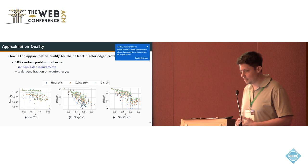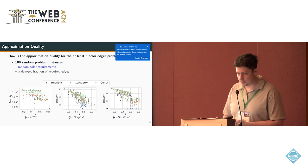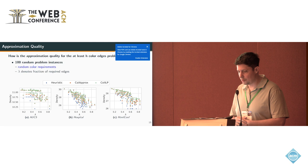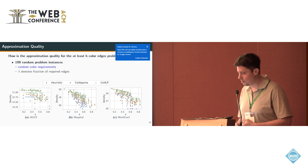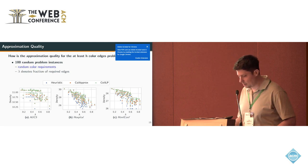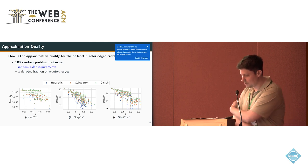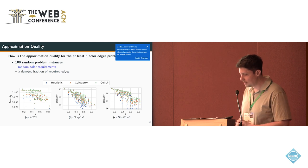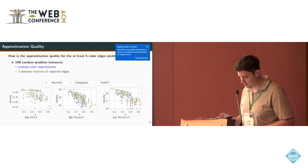We ran a few experiments on several datasets which have colors between 2 and 168 colors, and the minimum number of colors at the edges is between 2 and 21. First, we took a look at the approximation quality. To this end, we generated 100 random problem instances with random color requirements, and lambda denotes a fraction of required edges. We compare this with some simple heuristics. ColApprox is our approximation algorithm, and we introduced some ILP for solving the problem exactly - these are small instances.